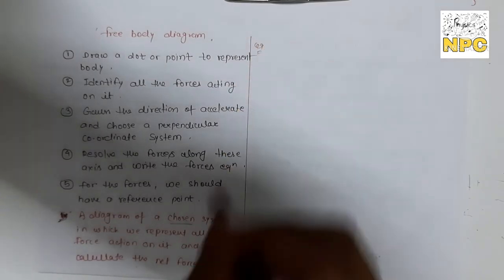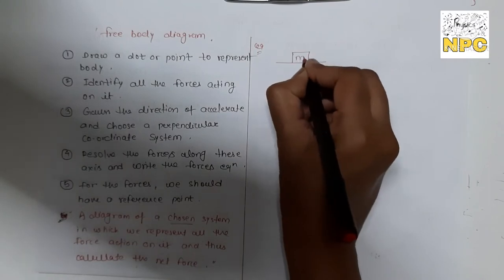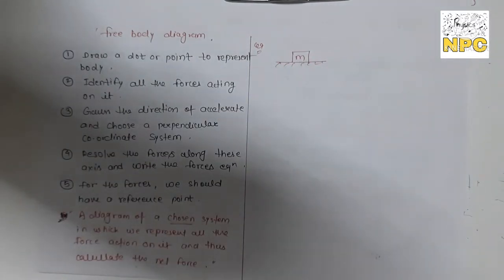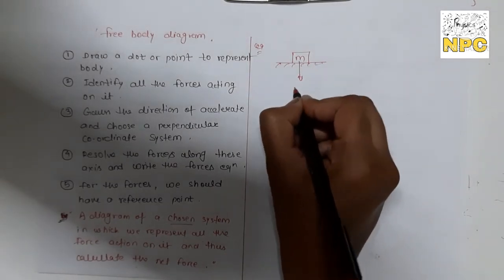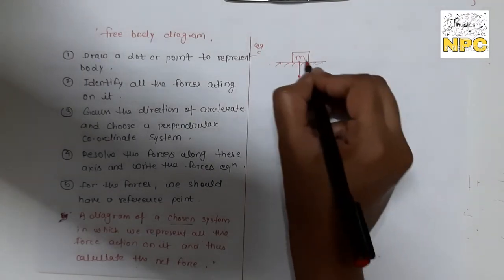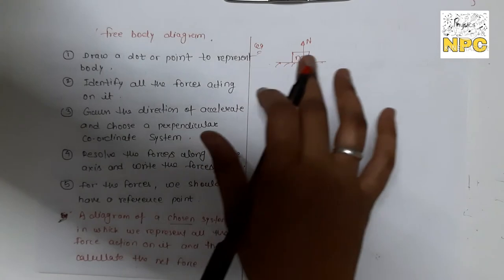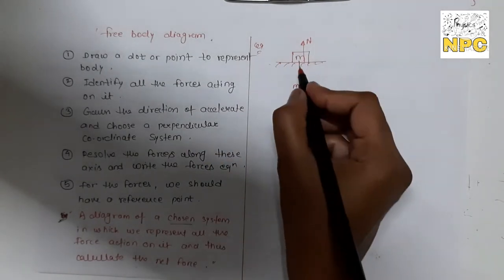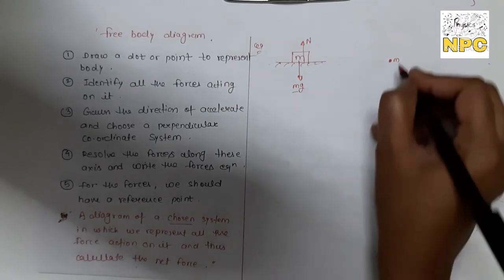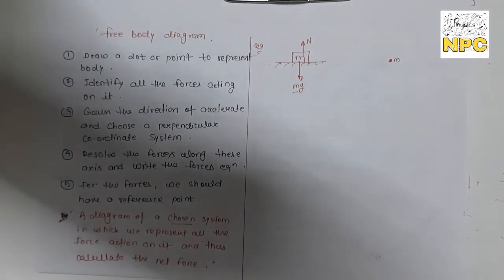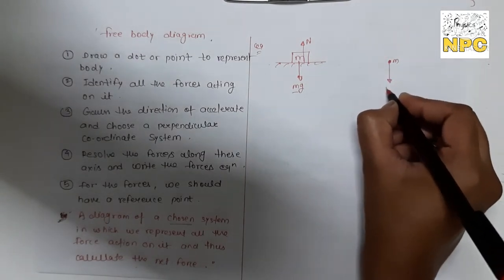Let's take an example: a body is placed on a surface and is not moving. To create the free body diagram, represent the body as a point. The forces acting are: the weight force mg acting vertically downward, and the normal reaction N acting perpendicular to the surface in the upward direction.